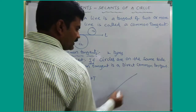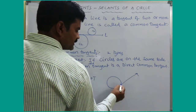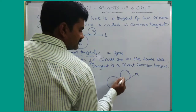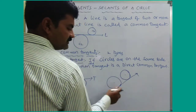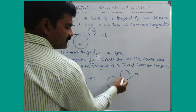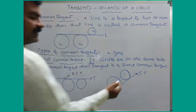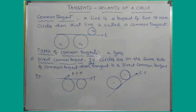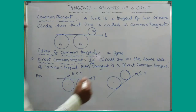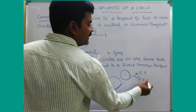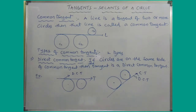We can also draw it like this. Let this be the position of circle one — it should touch at only one point. These are the two circles, and this is a common tangent. Even here, if you observe, the two circles are on the same side of the common tangent. Hence this tangent is considered as a direct common tangent.